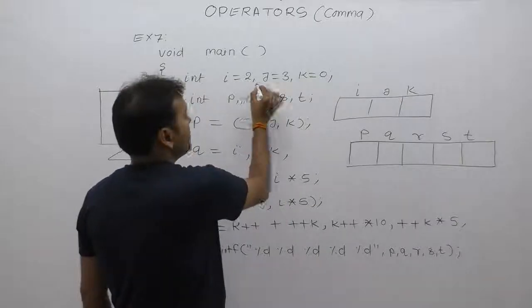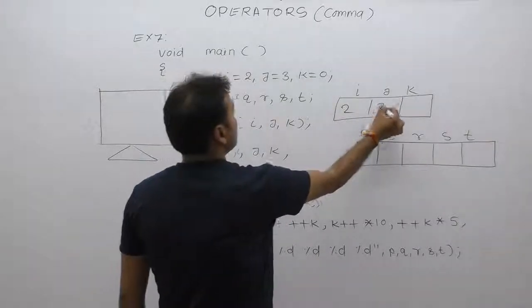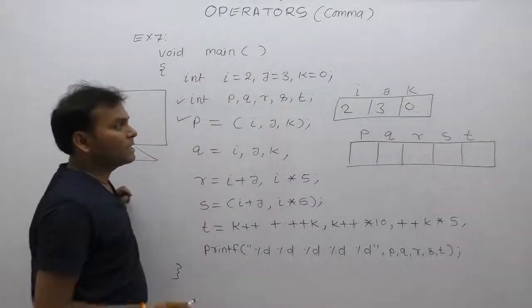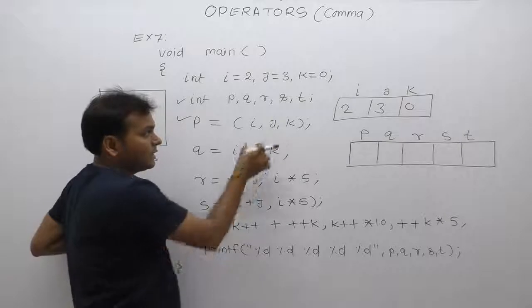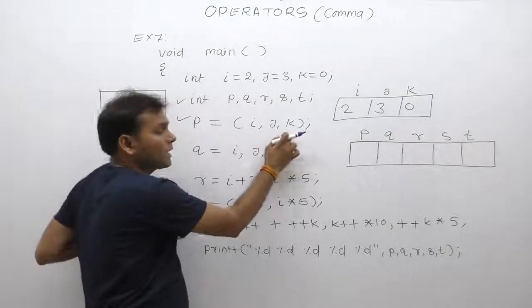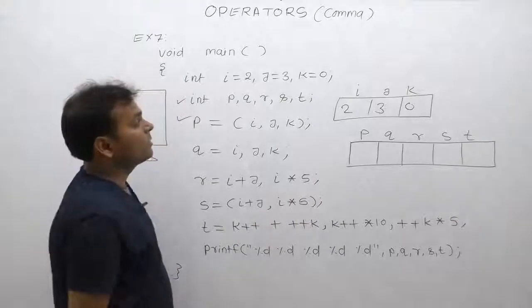Initial value of i is 2, j is 3, k is 0. Solving this expression one by one. As we discussed in previous cases, in the comma case in brackets, solve all the expressions from left to right.